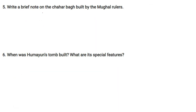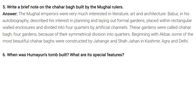The Mughal emperors were very interested in literature, art, and architecture. Babur, in his autobiography, described his interest in planning and laying out formal gardens placed within rectangular walled enclosures and divided into four quarters by artificial channels. These gardens were called chahar bagh (four gardens) because of their symmetrical division into quarters. Beginning with Akbar, some of the most beautiful char bags were constructed by Jahangir and Shah Jahan in Kashmir, Agra, and Delhi.